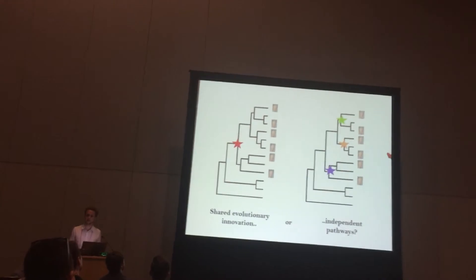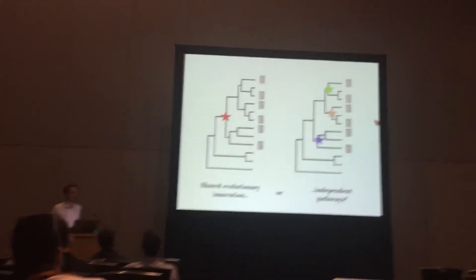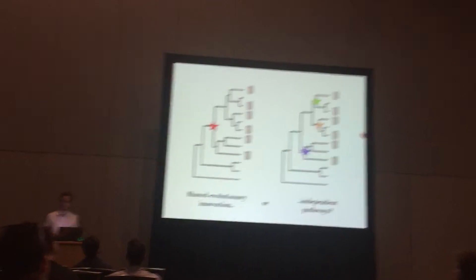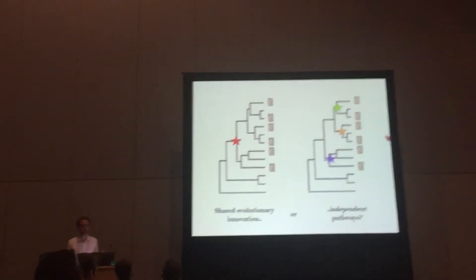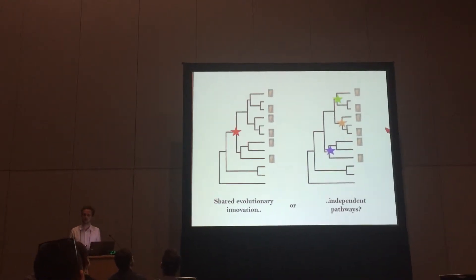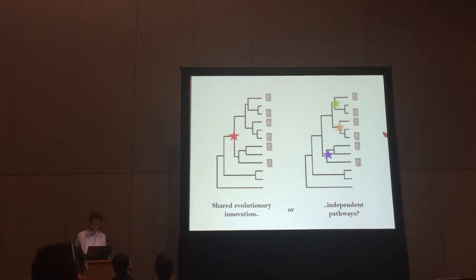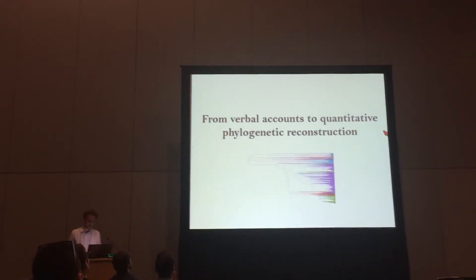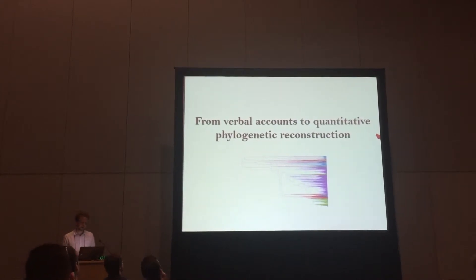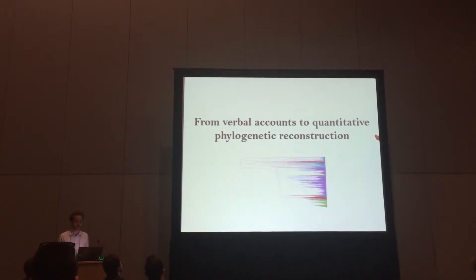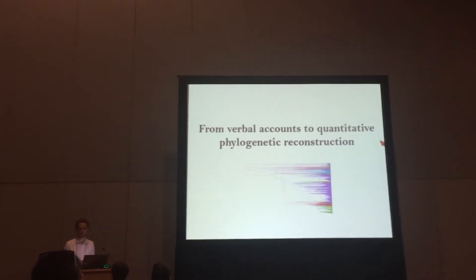In the first case, there would essentially be a single evolutionary trajectory of transformation, whereas in the second case there would be multiple, so to say, independent origins of the complex trait. But so far most competing models have ultimately been verbal arguments, and there has been no formal phylogenetic reconstruction of the mutualism.